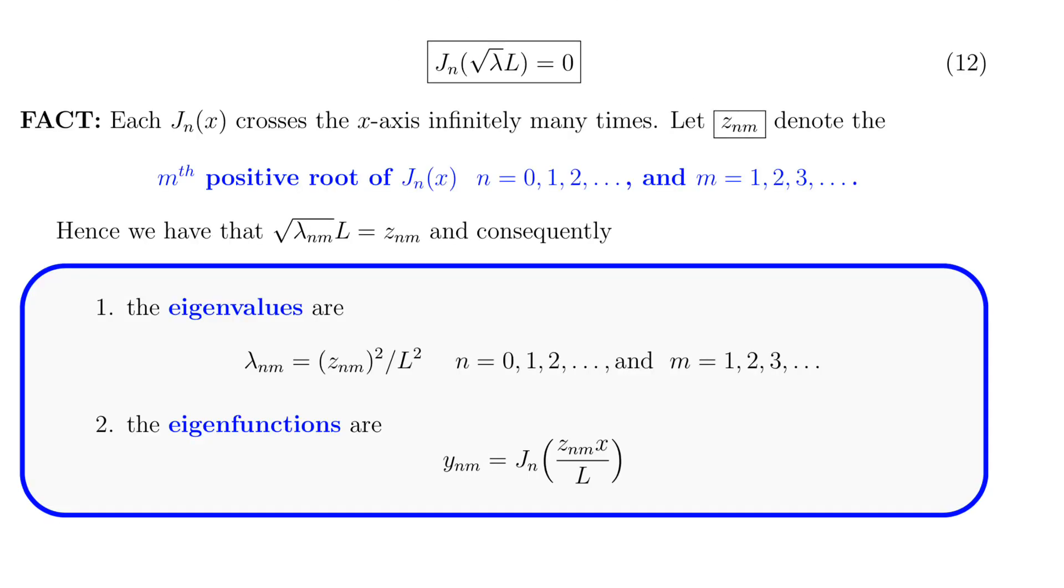Here's a fact we need to know about the Bessel functions, namely that each j sub n crosses the x-axis infinitely many times. That means it has infinitely many zeros, and the standard notation from the literature is to denote by z sub nm the m-th positive root of j sub n. Notice the ordering. The first index n denotes which Bessel function, and the second index m denotes which root.